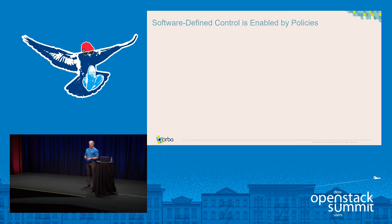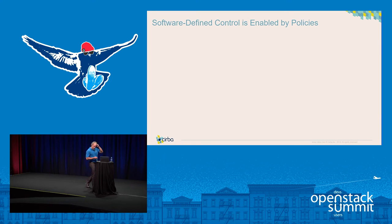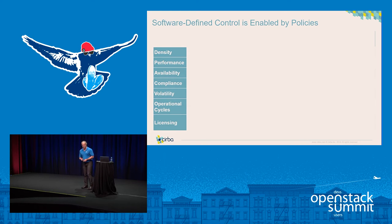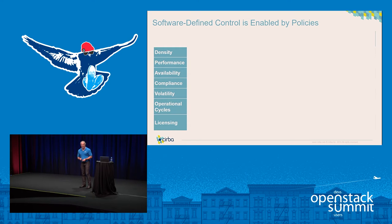Software-defined control is enabled by policies — the way you govern and manage the environment. You've got different parameters to watch: things like density, performance, the application's availability requirements, compliance in terms of which workloads run where and which ones can run together, and whether they can run internally or in the external cloud.